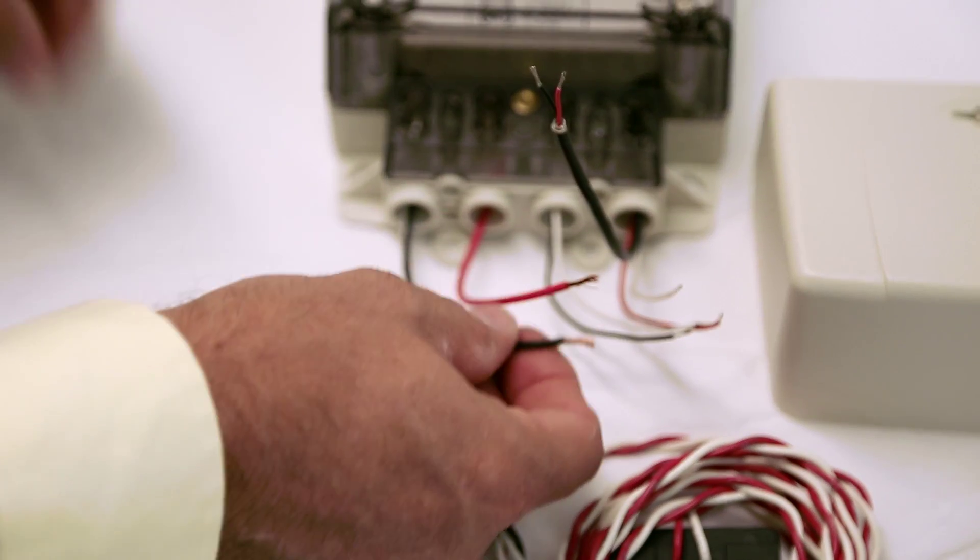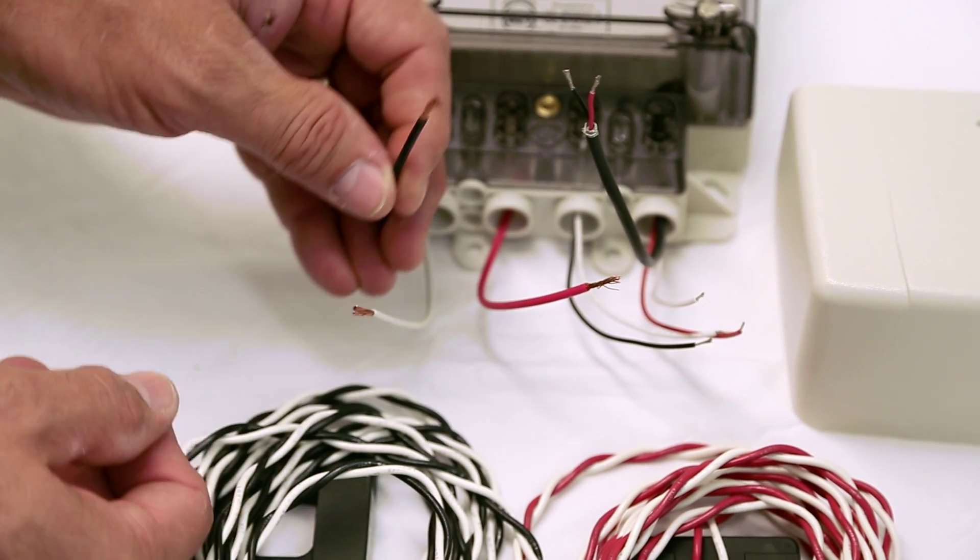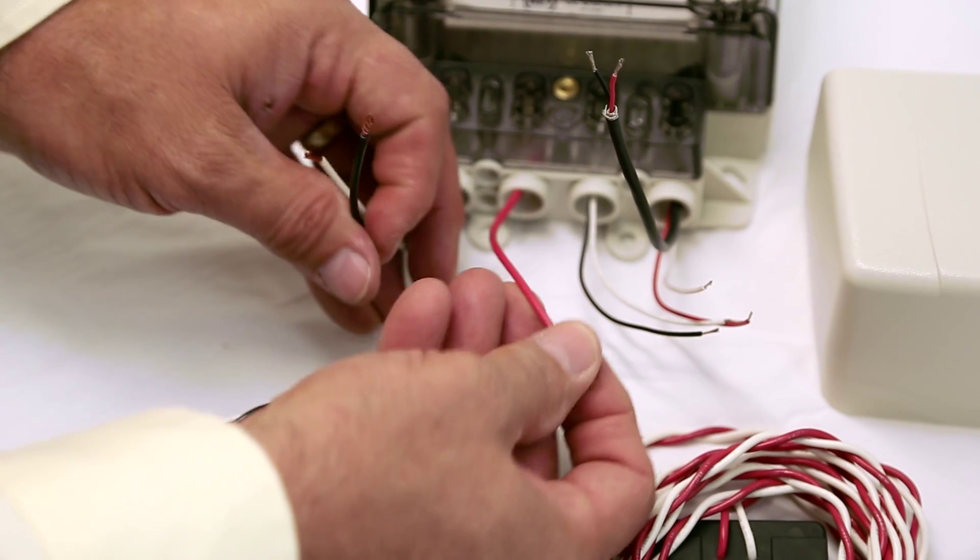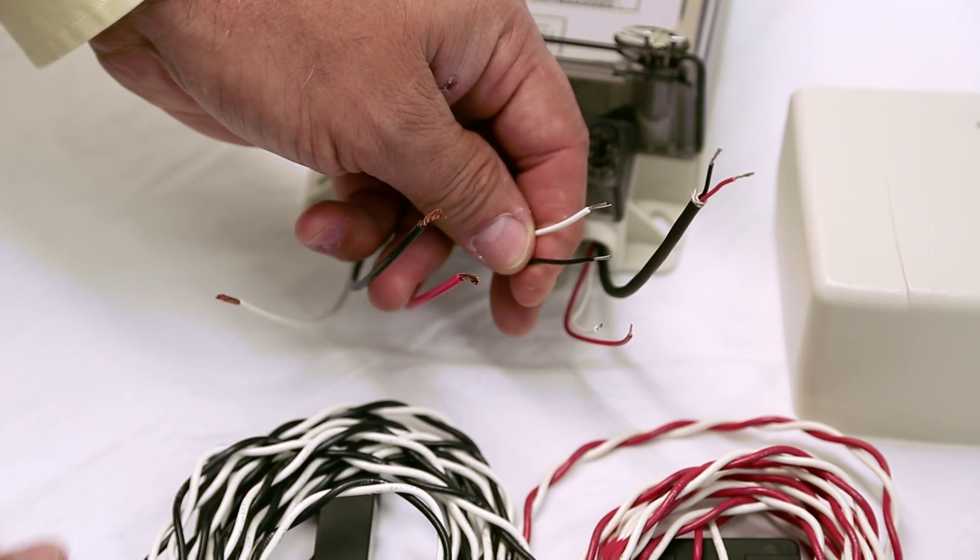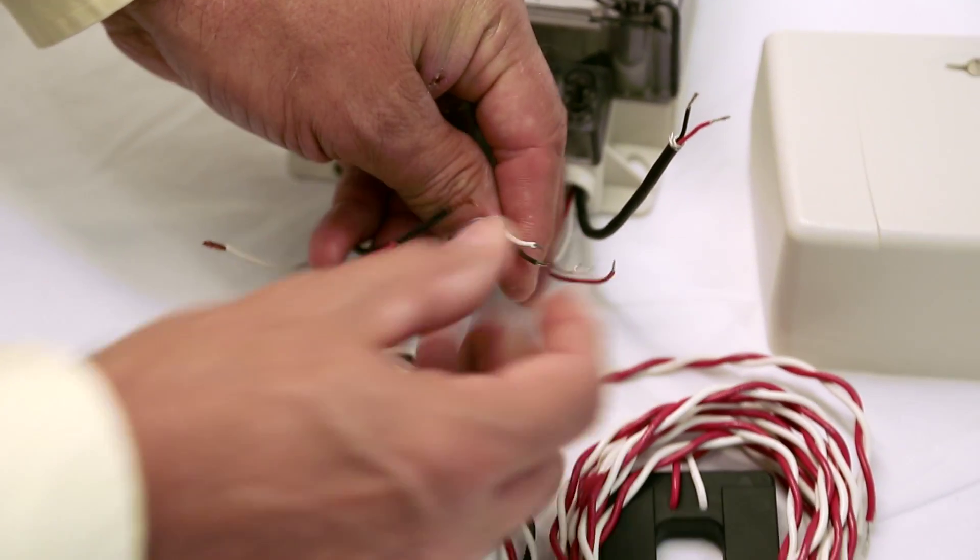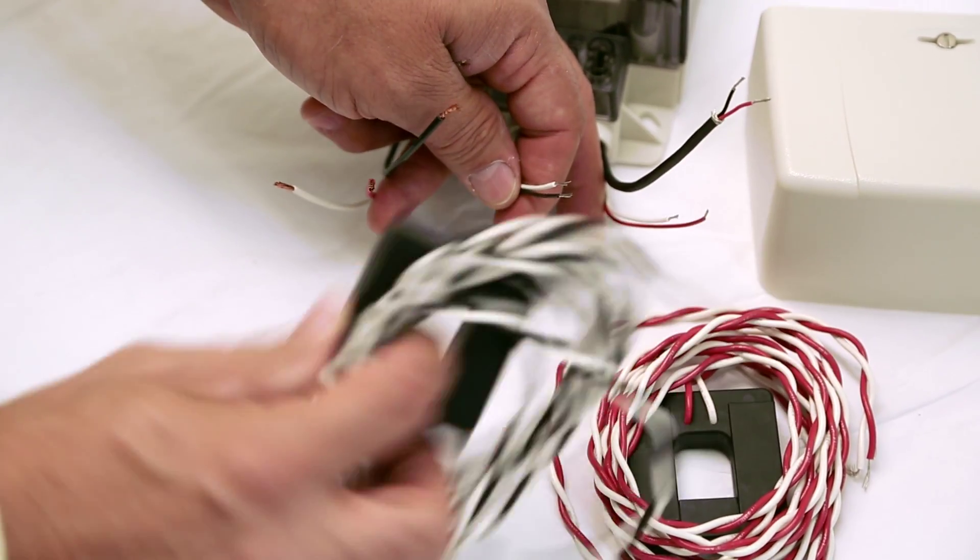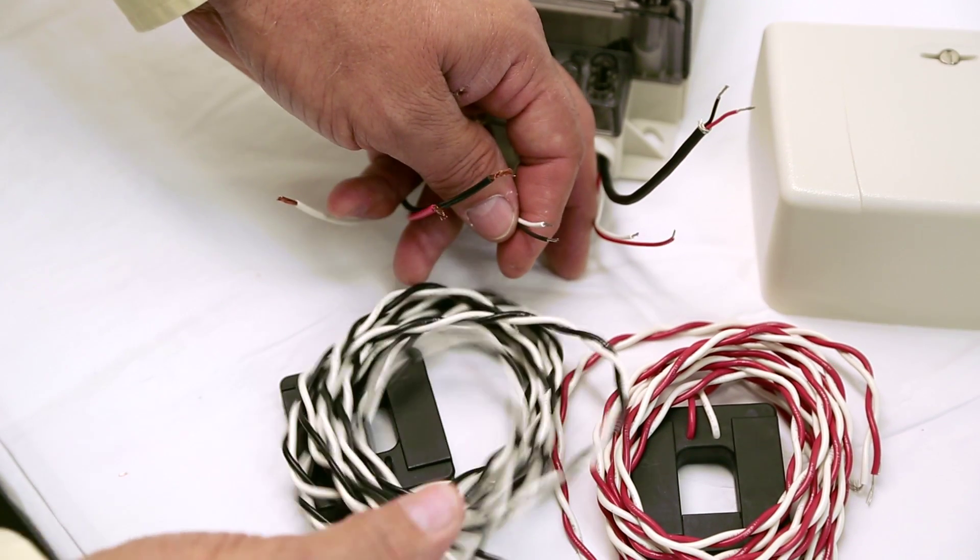These are your voltage connections: black for line one, white wire for neutral, and the red wire for line two. The black and white wires are your CT connections for the CT included with the meter that have the black and white leads.